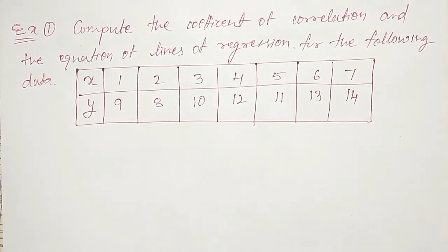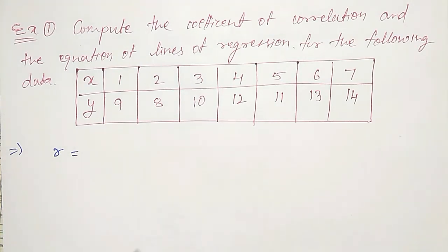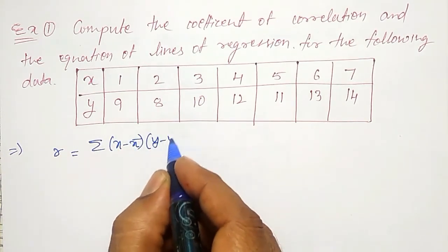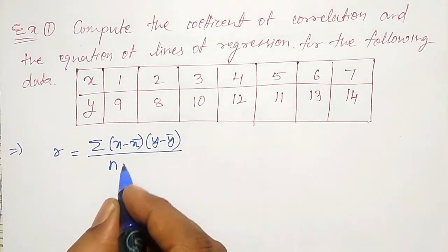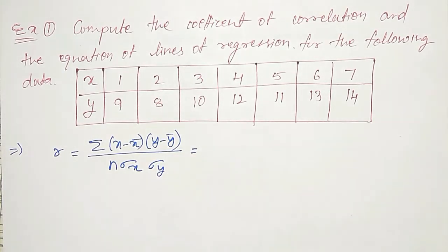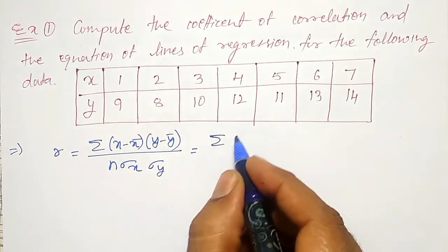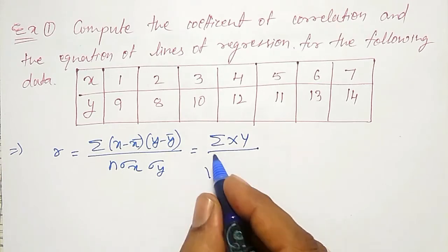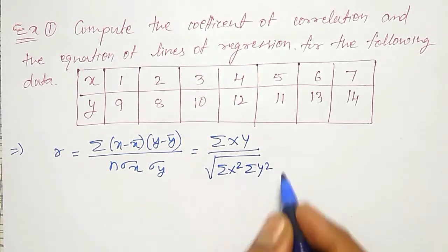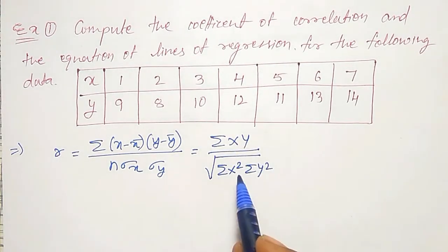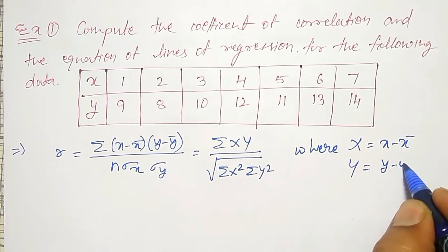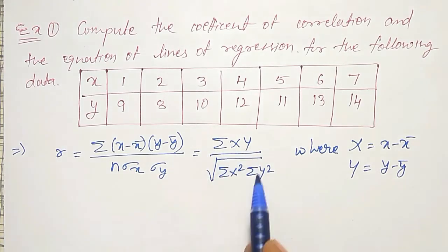For this, I will first list the formulas I am going to use and prepare the corresponding table. The correlation coefficient r is given by the formula: summation of (x minus x̄) into (y minus ȳ), divided by n times σx times σy. From this, I derive a second formula: summation of capital X times capital Y, divided by the square root of summation X squared times summation Y squared. The second formula is the easier one, where capital X is x minus x̄ and capital Y is y minus ȳ. Using this, we can avoid computing σx and σy separately.